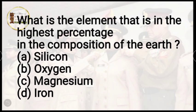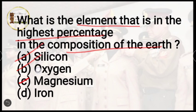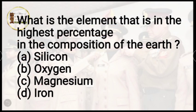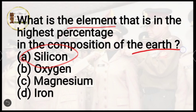Question number 11: what element is present in the highest percentage in the composition of earth? Options are silicon, oxygen, magnesium, or iron. As the question asks about the element in the earth overall — in the earth's crust, silicon is found most abundantly, but since the question says overall earth, the correct answer is option B, oxygen.